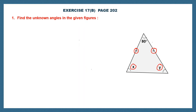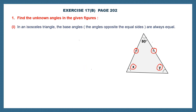A triangle which has two sides equal is called an isosceles triangle. Now this is a very important property of the isosceles triangle. In an isosceles triangle, the base angles — that is, the angles opposite the equal sides — will always be equal.